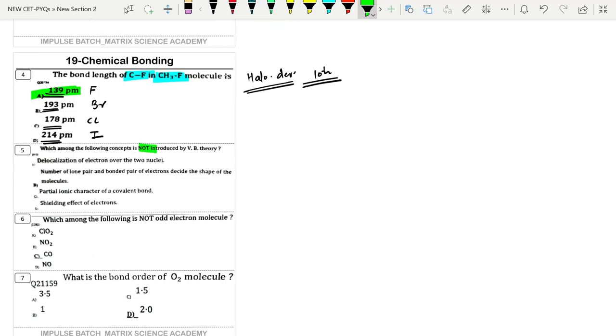Which among the following is not introduced by VBT, valence bond theory? Number of lone pairs and bonded pairs decide the shape - this is part of VSEPR and not part of VB theory. The other statements like delocalization of electrons, partial ionic character, and shielding effect are all from valence bond theory, but the shape part does not come from valence bond theory.